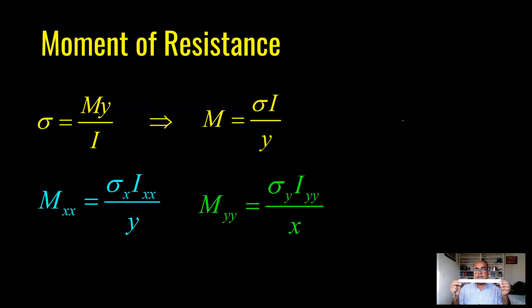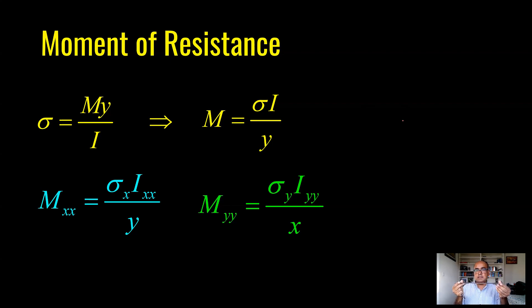M-YY on the other hand — if I turn the section 90 degrees and apply loading — is the minor axis bending resistance. The beam is more flexible in this orientation. This is major axis and that is minor axis.